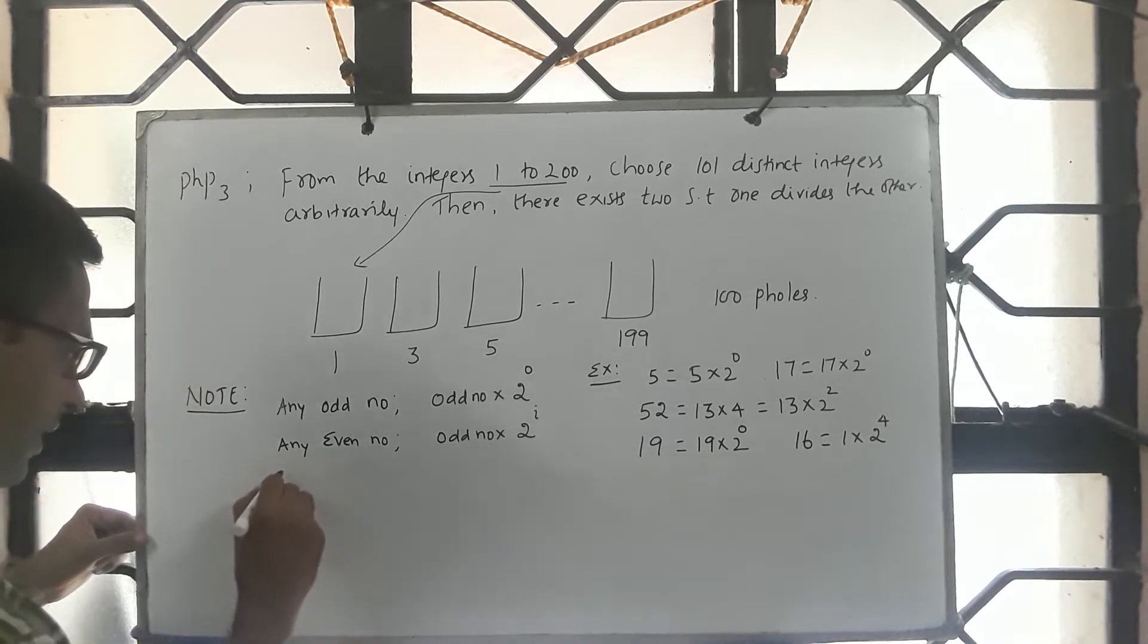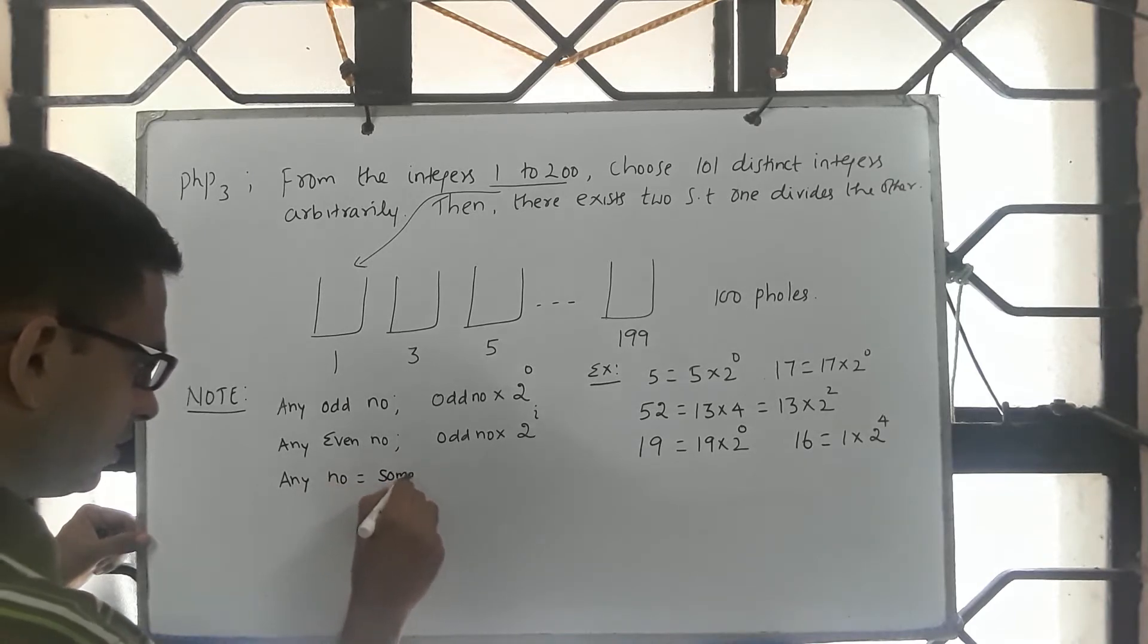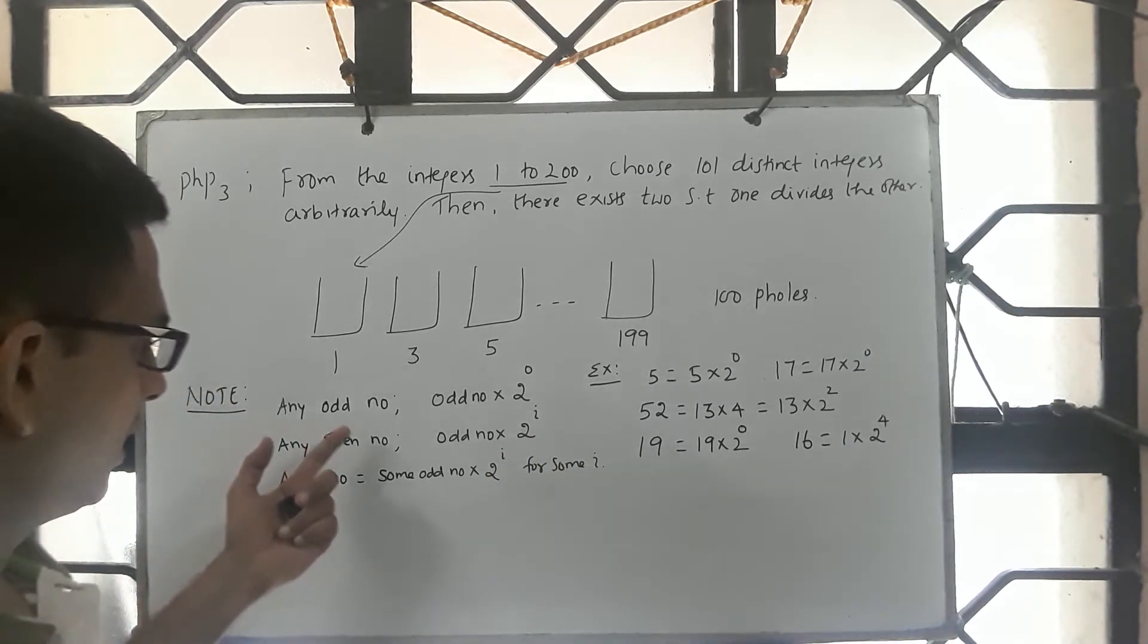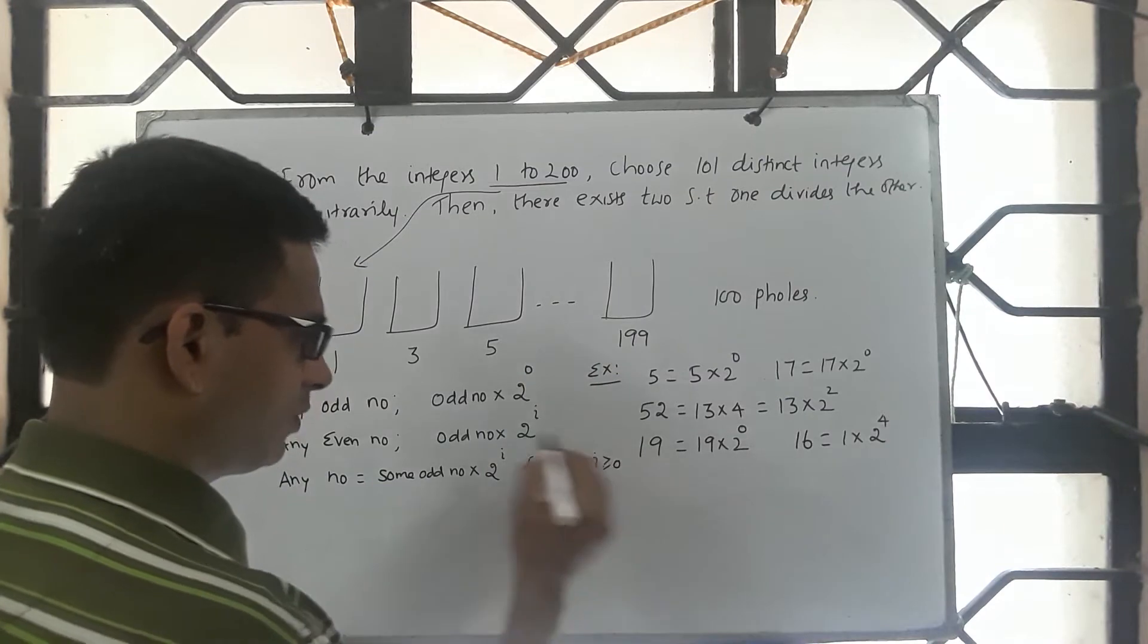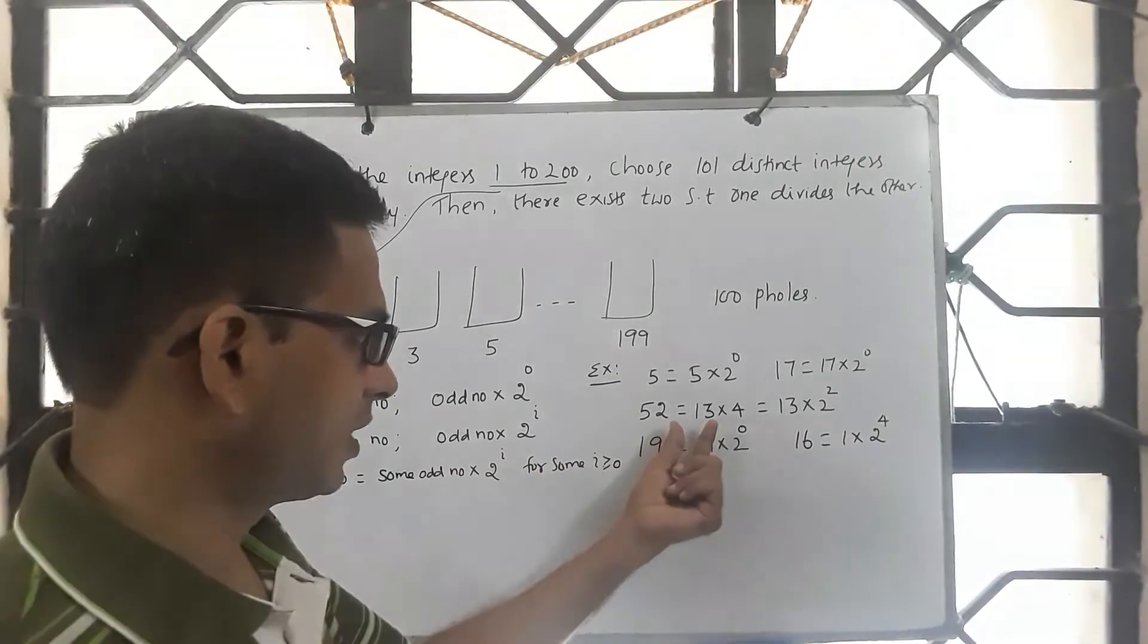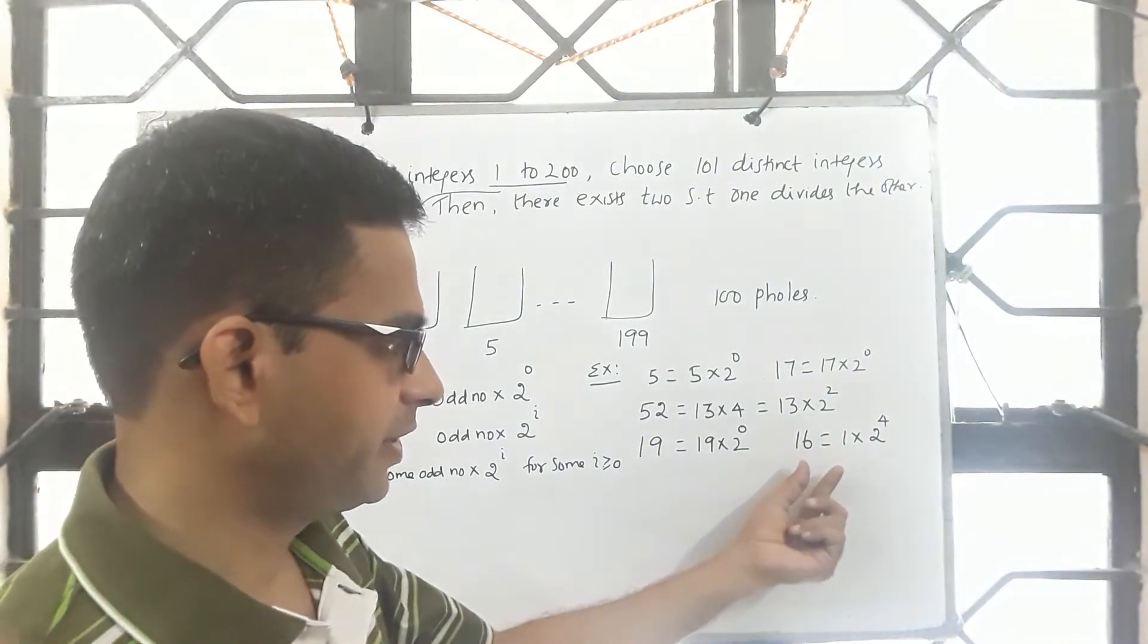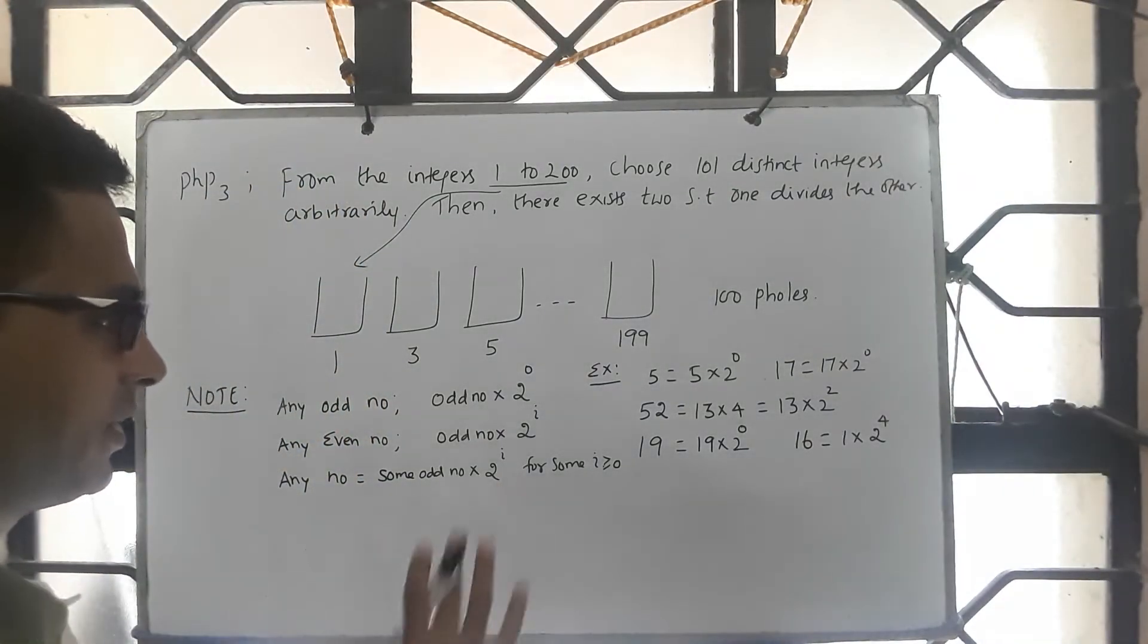So in general, any number can be written as some odd number into 2 power i for some i. If it is odd number, you simply take that number itself into 2 power i and i greater than or equal to 0. And if it is an even number, you can split them. You can write them as some odd number into some 2 power i. For example, 19 you write as 19 into 2 power 0, 16 you write as 1 into 2 power 4. And so that is all the scheme is done.